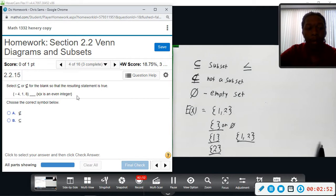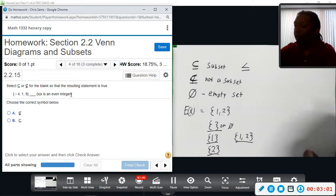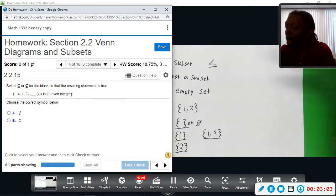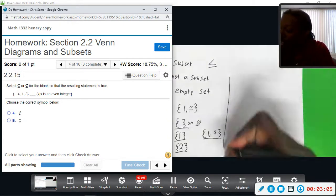So this set over here is the set of all x values such that x is an even integer. Okay, so what would that set look like?